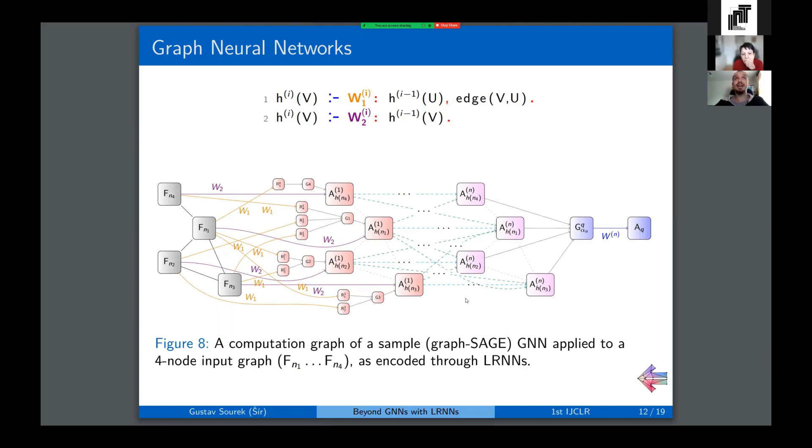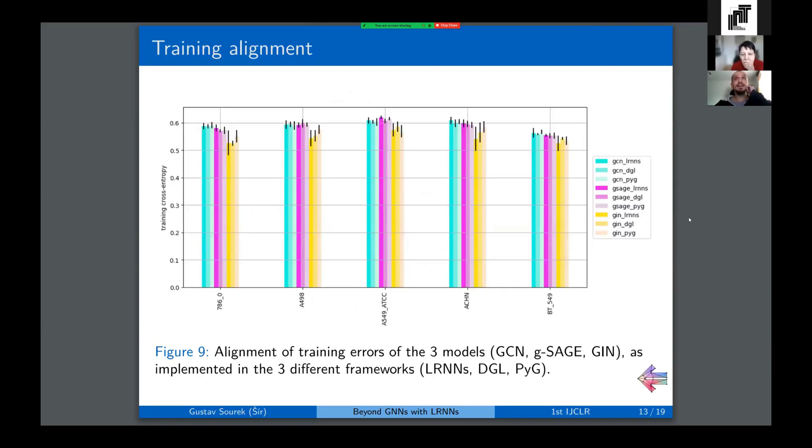The thing to note here is that these rules, this is not some abstract mathematical notation as is common for explaining graph neural nets in papers. This is the actual code that you can run in the framework, which we find quite neat. And you don't have to believe me that it induces the exact same computation. We have evaluated that experimentally as well.